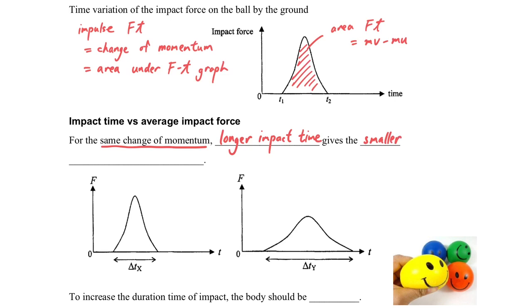For the same change of momentum means that the area under the force-time graph will be the same. If we allow it to have a longer time for contact, then the average impact force will be smaller, since both of them have the same impulse, which means they have the same area.